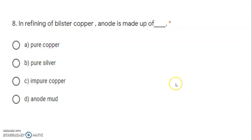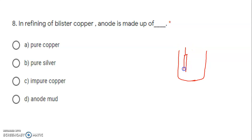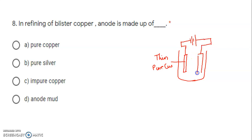Next: in refining of blistered copper, anode is made up of what? To refine copper, a thin plate of pure copper is used as cathode. The impure copper — that is the blistered copper — is used as anode. So in refining of blistered copper, the anode is made up of impure copper (blistered copper). The correct answer is impure copper.